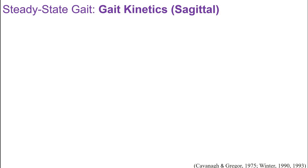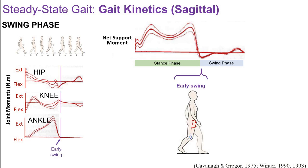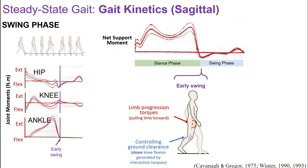Having looked at stance phase gait kinetics, let's now look at joint torques in the swing phase. Here we again see the joint torques for the hip, the knee, and the ankle, and the resulting net support moment. In the early swing phase, hip torques perform the function of pulling the limb forwards, setting it in motion so it can swing forwards and later act to catch the body as it falls forward. We also see a small knee extension torque. The hip flexion pulls the whole limb forward; if unchecked, this will cause the knee to flex. The small knee extension torque counteracts this tendency and controls the passive knee flexion generated by the interaction torque, allowing control of how the limb progresses forwards.